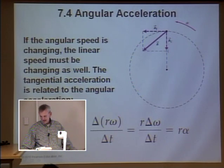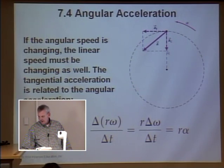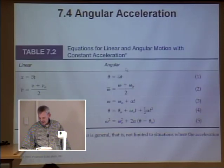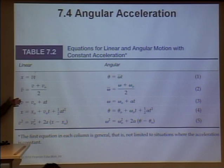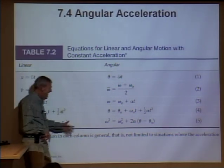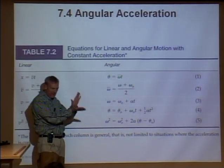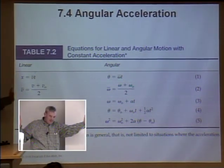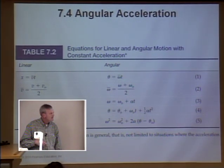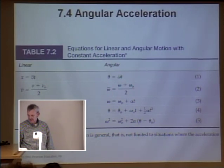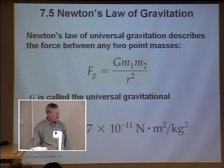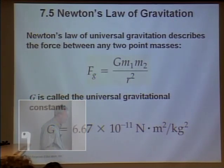You put the centripetal acceleration ac and the tangential acceleration at together for the total acceleration of the object. The ac points straight toward the center; at points tangentially. This is instantaneous — at a different point on the circle it will be oriented differently. These look like the nightmares from chapter two, now showing up in chapter seven in angular form.